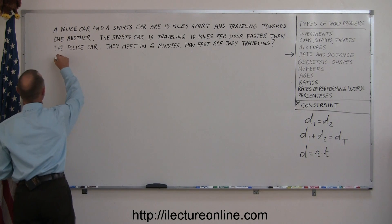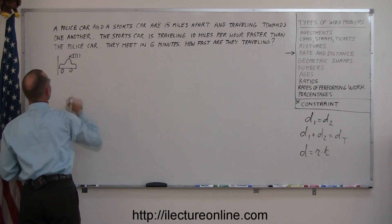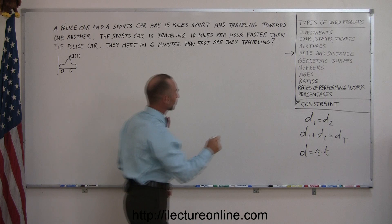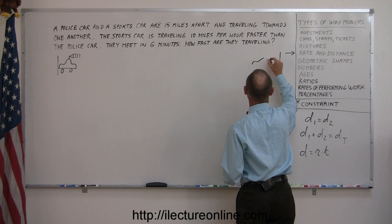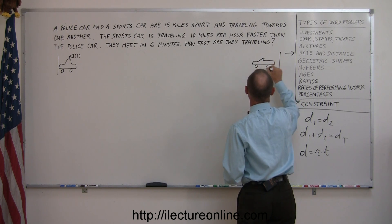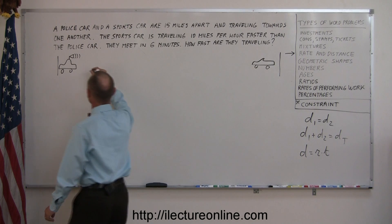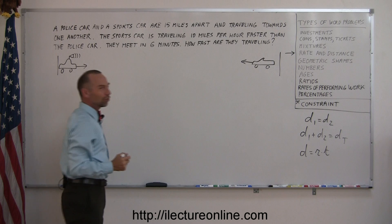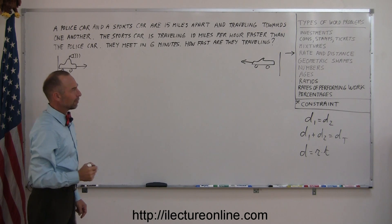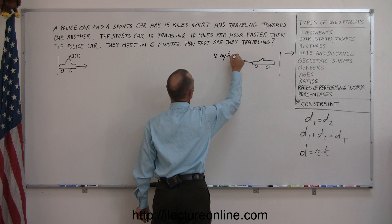So on one end, you have the police car. And on the other end, you have the sports car. They're traveling in opposite directions. The sports car is traveling 10 miles per hour faster. So 10 mph faster.